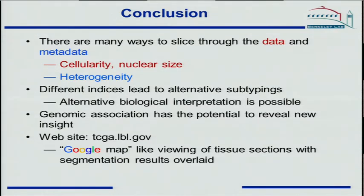In conclusion, there are many ways to slice and dice the data. We've shown examples in terms of cellularity and nuclear size, but many other features are computed and registered with our system. Meta-features such as heterogeneity can yield different biological interpretations depending on which features are used. We've shown new ways of linking this information to genomic data, and all our data is available through our website, which supports a Google Maps type of viewing for tissue sections as well as segmentation results overlaid on top.